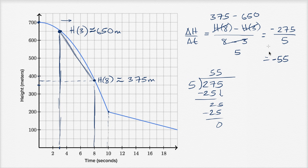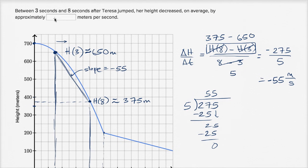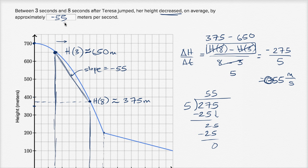Negative 55, and the units — her height is given in meters, so this is meters per second. Her average rate of change of height over this five seconds is negative 55 meters per second; the slope equals negative 55. Now, it might be tempting to write negative 55 in the blank, but the sentence says her height decreased — the word 'decreased' is already taking the negative into consideration. The negative is telling us we're decreasing at a rate of 55 meters per second.